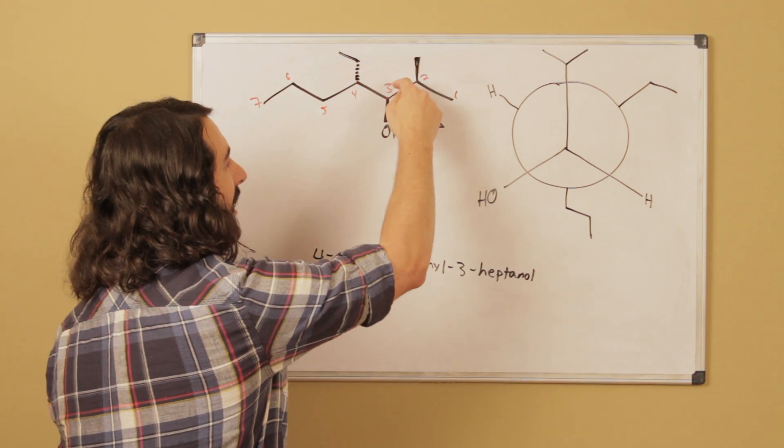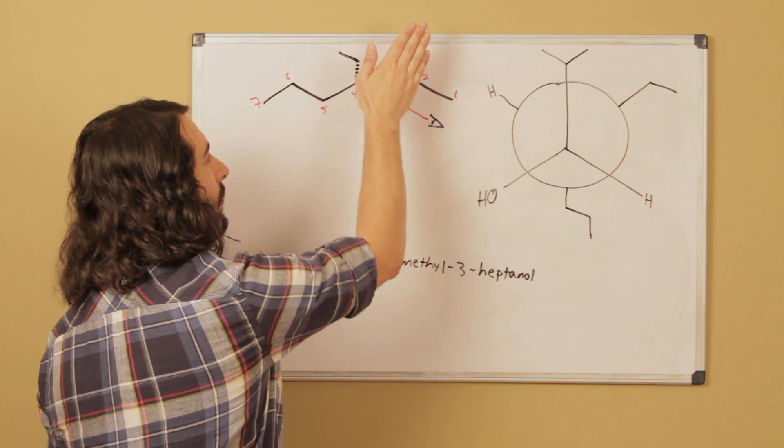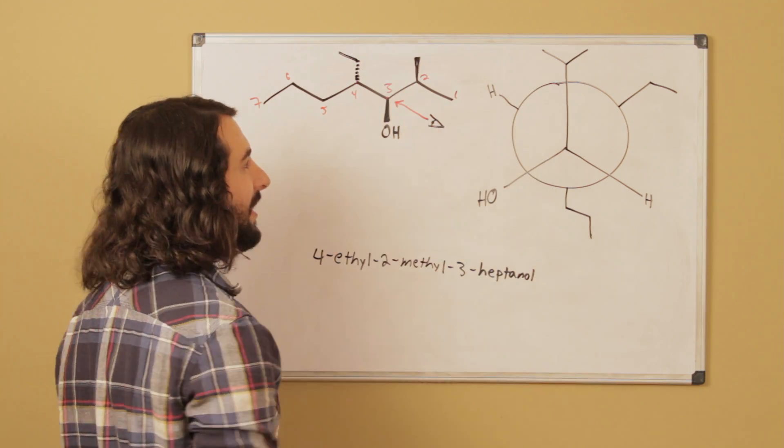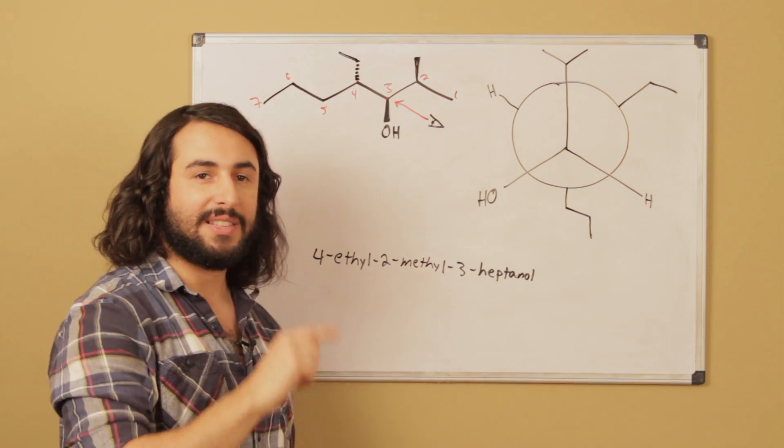Because these 2 methyl groups are identical. So this is not a stereocenter, which we could see if we just rotate around this bond, this carbon could be up here, that carbon would be down there, it would look different. So that is actually not a chiral center.